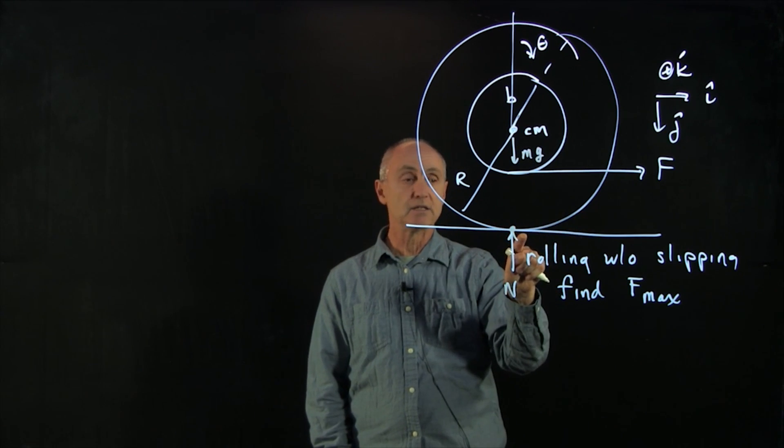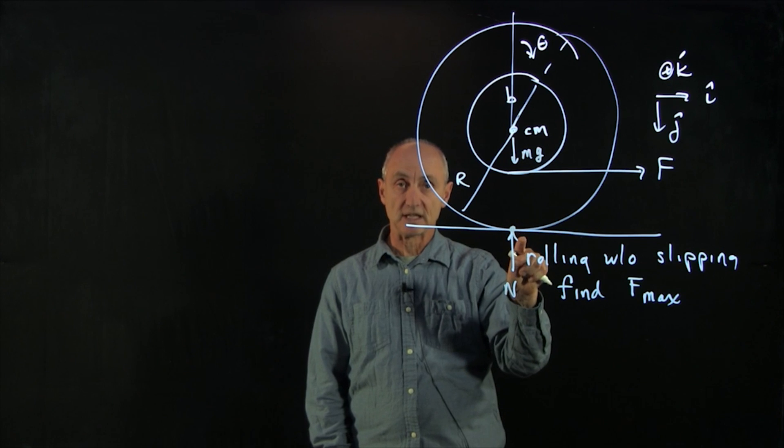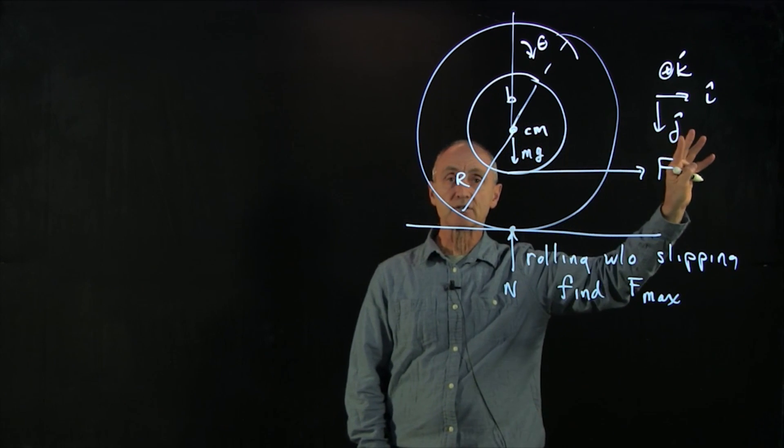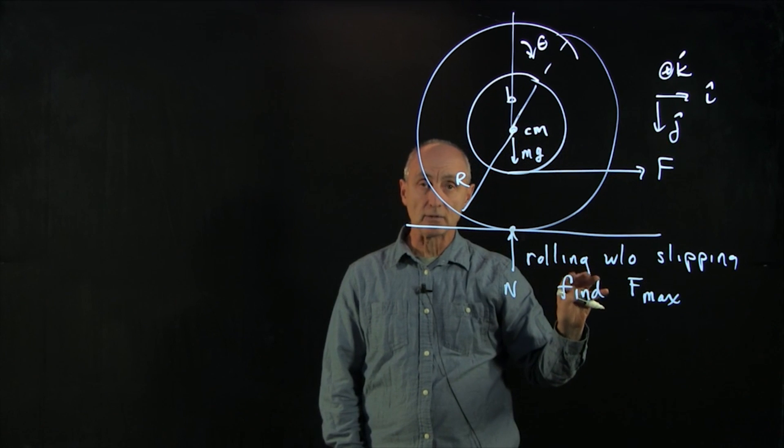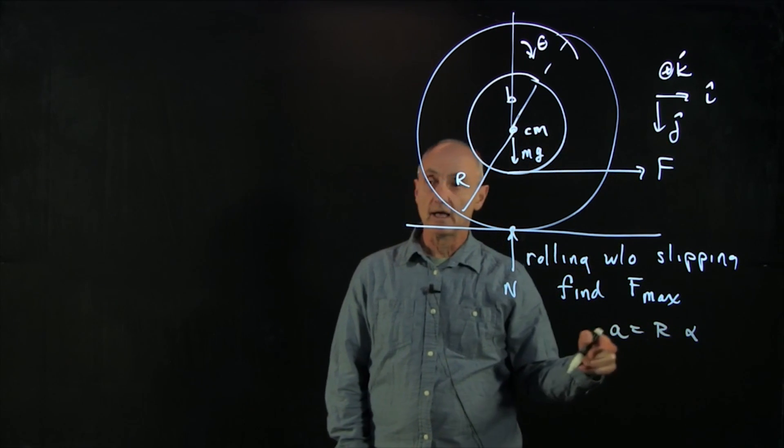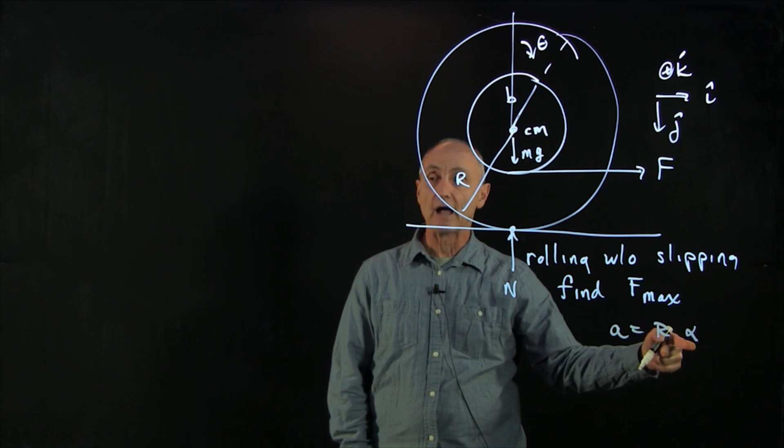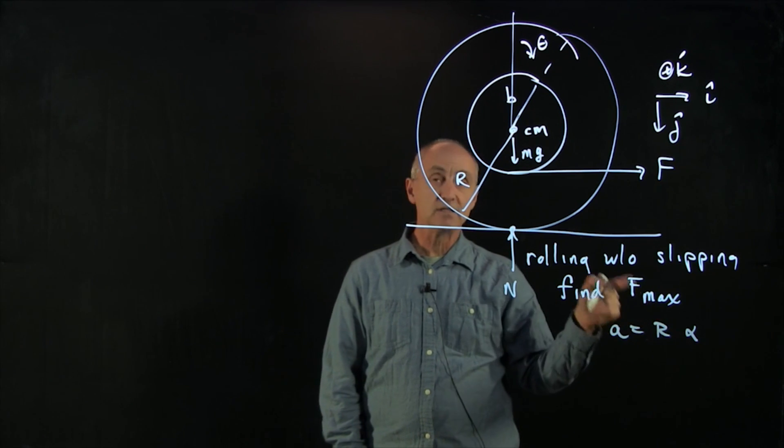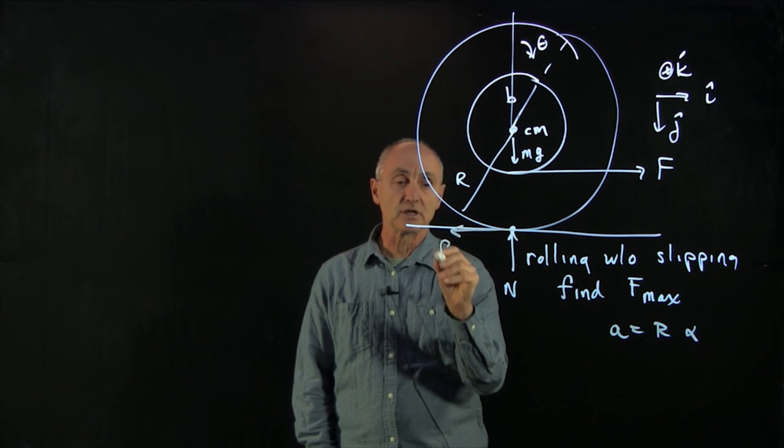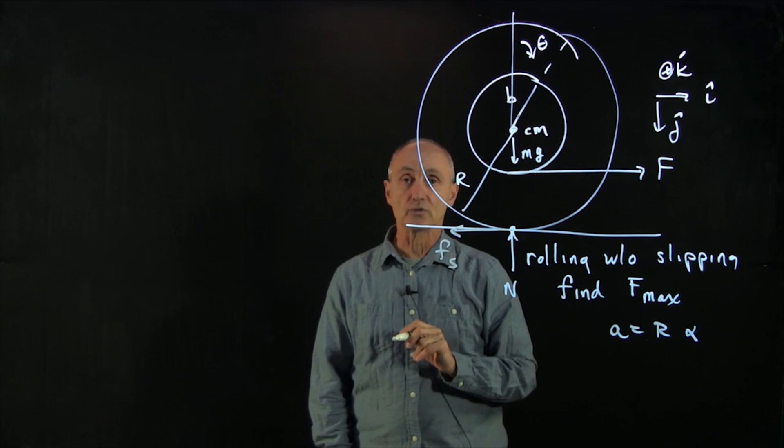So the wheel is, the contact point is instantaneously at rest. But because the center of mass of the wheel is accelerating, once again, in order to keep a equal to r alpha, then we need some type of torque that will produce a non-zero alpha. And that's going to come from a non-zero static friction.